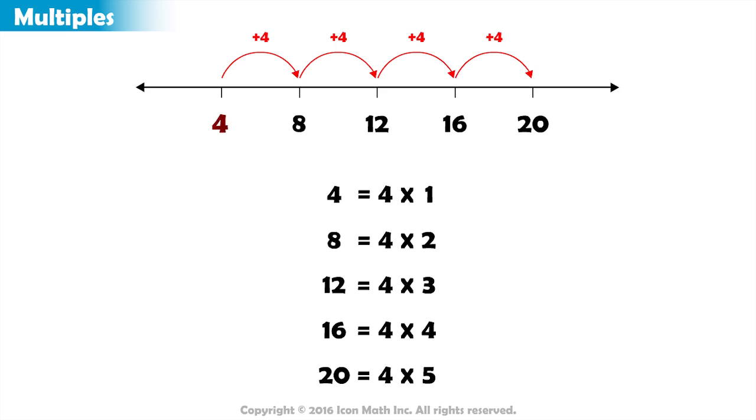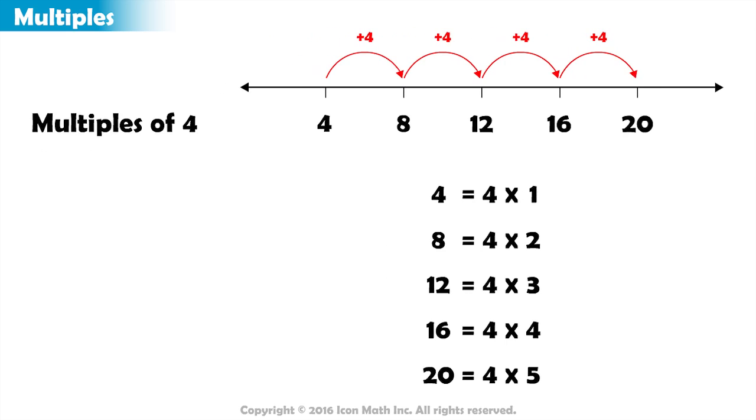These numbers 4, 8, 12, 16, and 20 are called multiples of number 4. Notice that each one of these numbers is the result of multiplying 4 by another whole number.